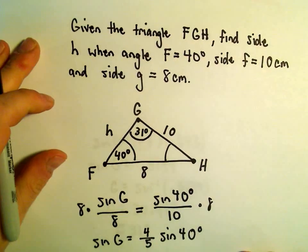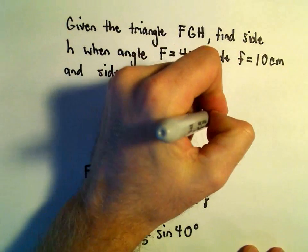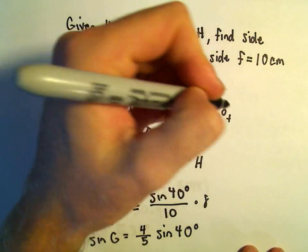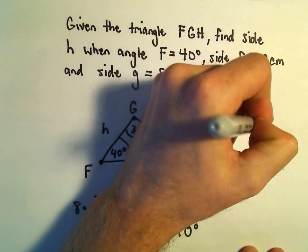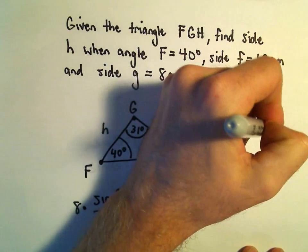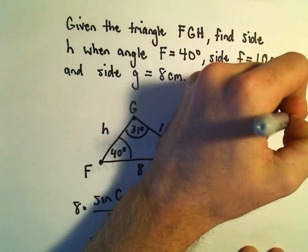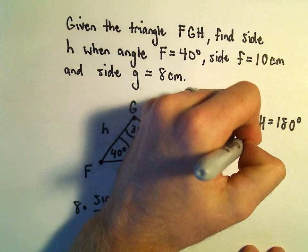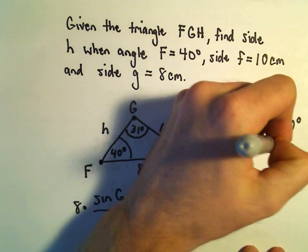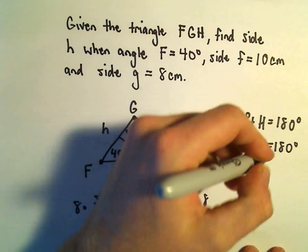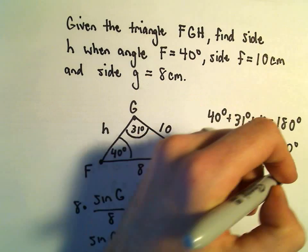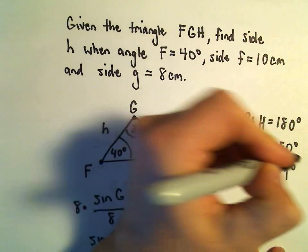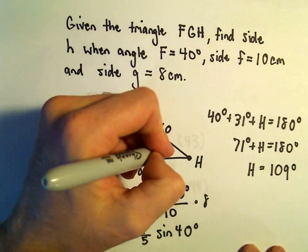Well, again, we know that if we add up the angles all together, they have to add up to 180. So 40 degrees plus 31 degrees plus whatever angle H is, that's going to equal 180 degrees. Well, 40 and 31 is going to give us 71. If we subtract 71 from both sides, it looks like we'll get 109 degrees for H.